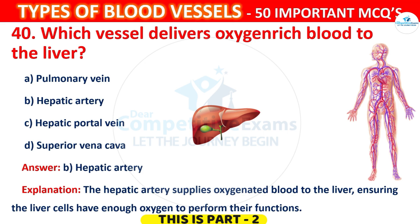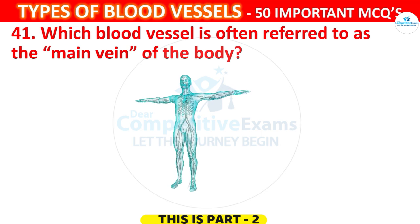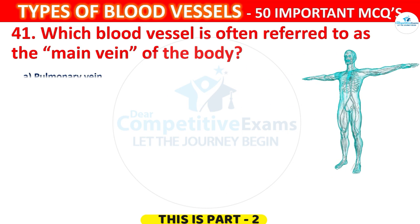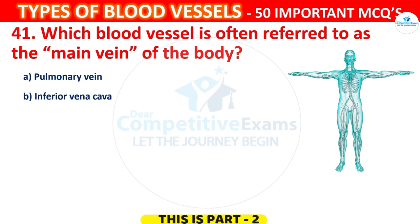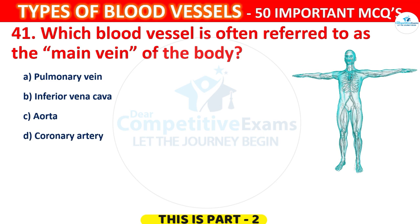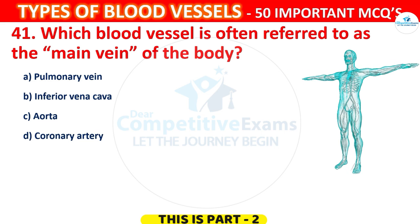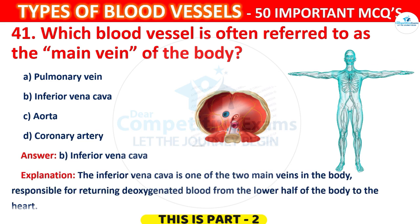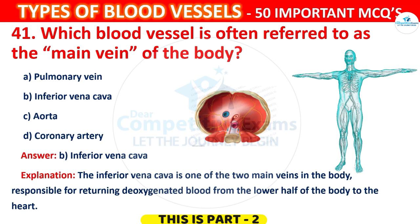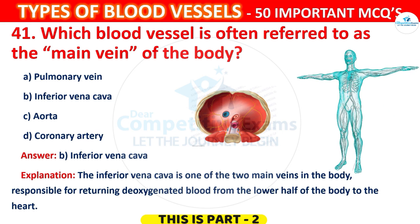Question 41. Which blood vessel is often referred to as the main vein of the body? Options are: Pulmonary vein, Inferior Vena Cava, Aorta, or Coronary artery. The correct answer is B, Inferior Vena Cava. The Inferior Vena Cava is one of the two main veins in the body, responsible for returning deoxygenated blood from the lower half of the body to the heart.